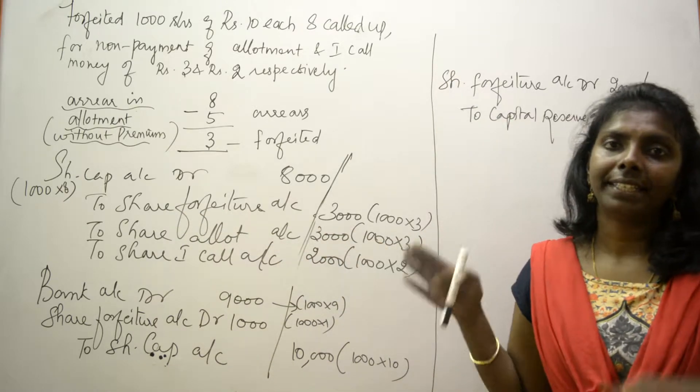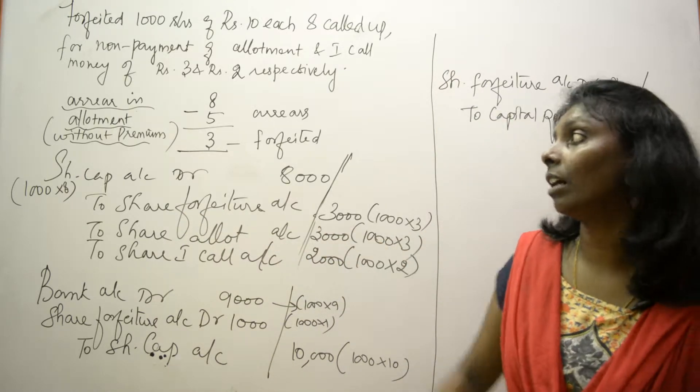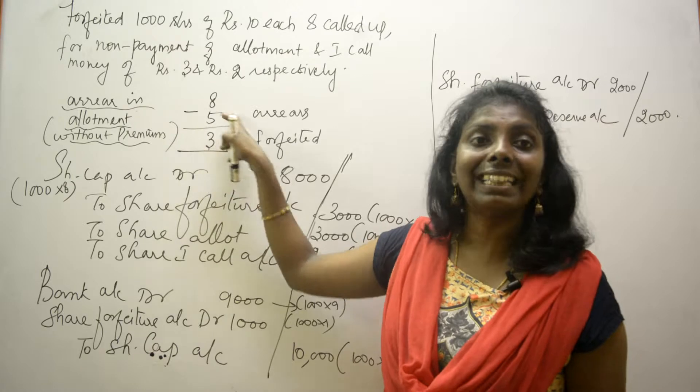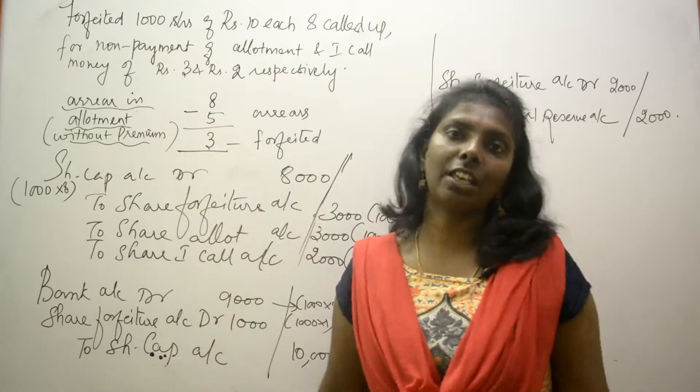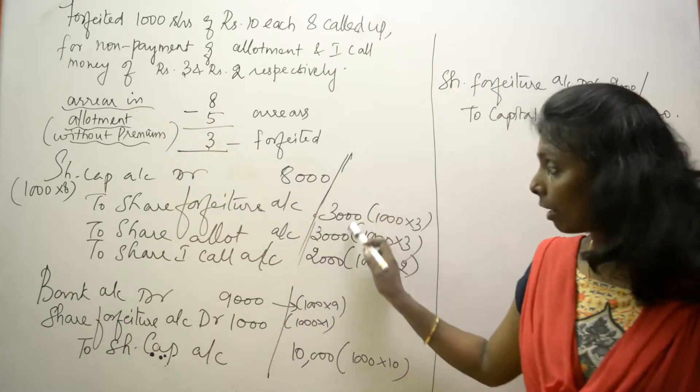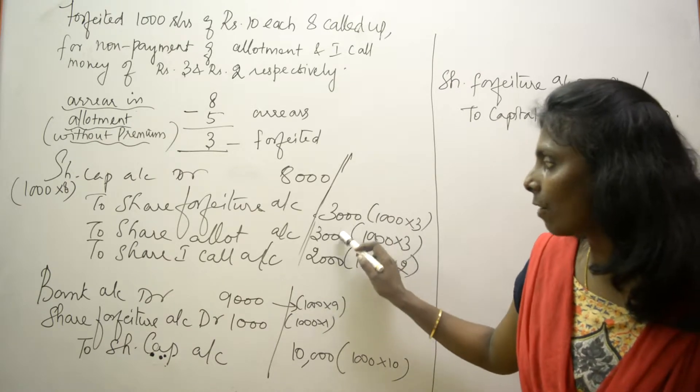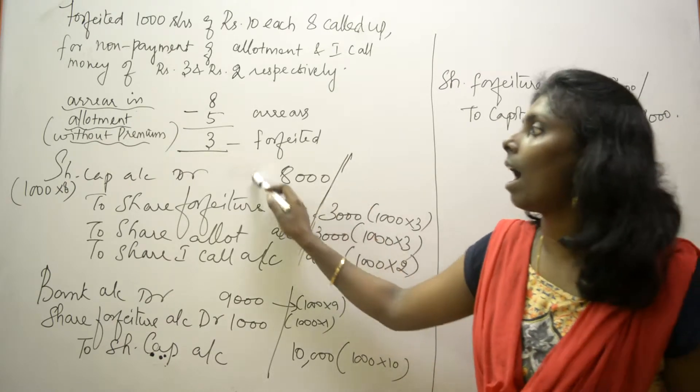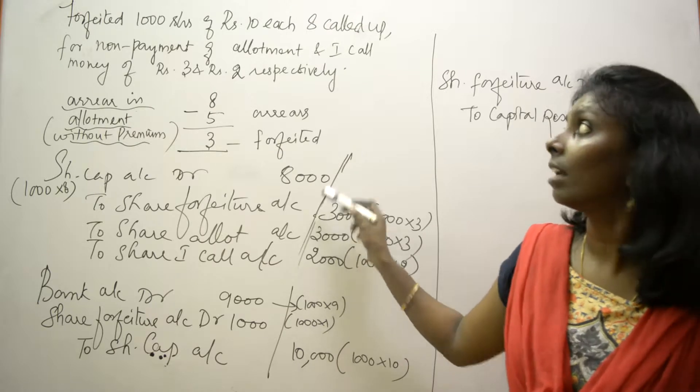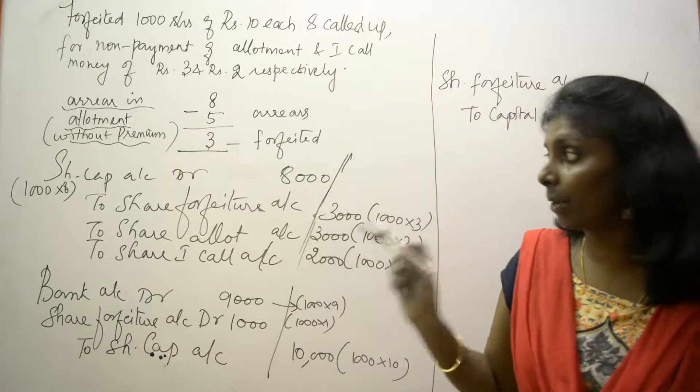What do I fill in share forfeiture? The amount received so far. Here the amount received is only 3 because I did not receive 5, so that is the forfeiture amount. So I filled all this. If I add everything, I should get 8000.